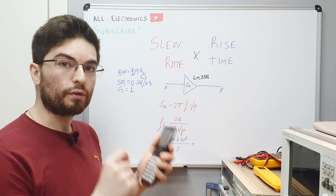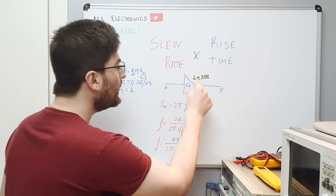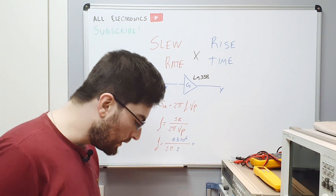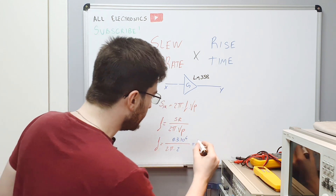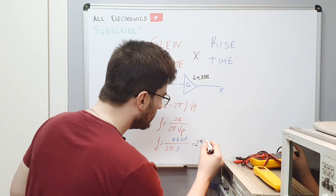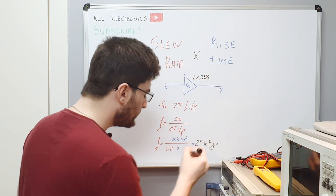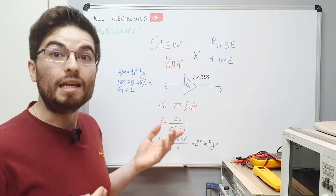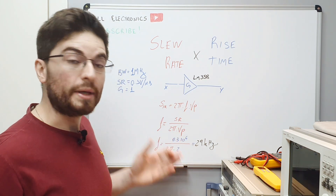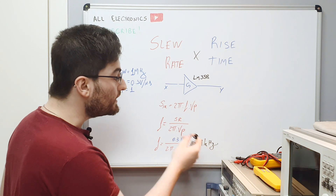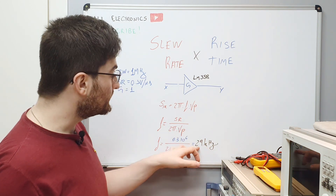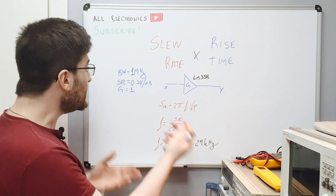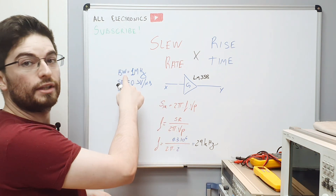The maximum frequency we can slew an LM358 with a 2 volt peak signal is approximately 29 kilohertz. So we can see that we are slew rate limited with a 2 volt peak to 29 kilohertz, which is much smaller than the linear bandwidth of the amplifier.